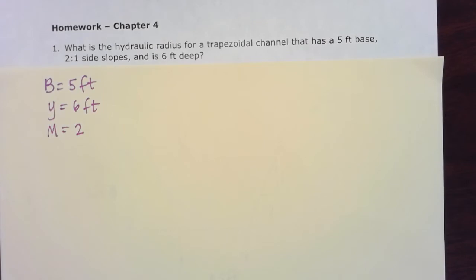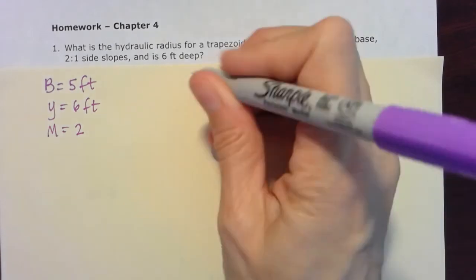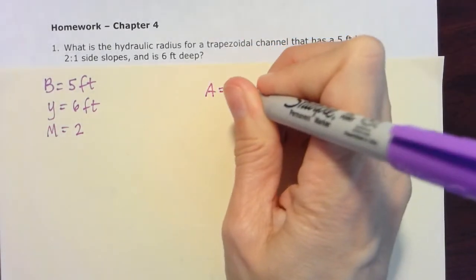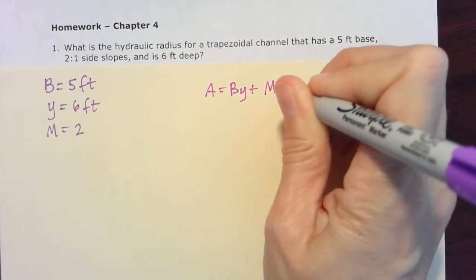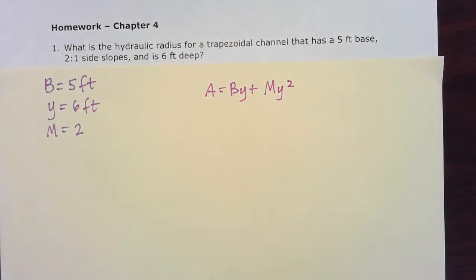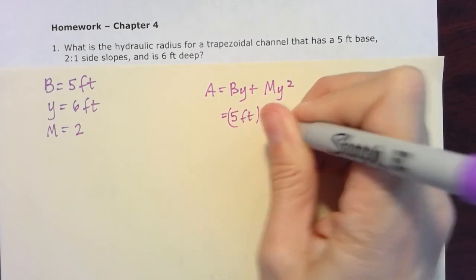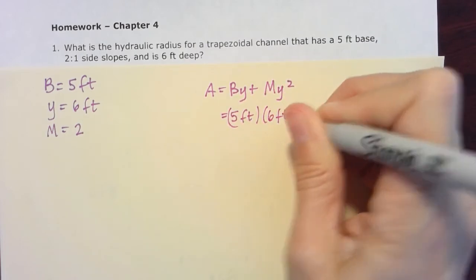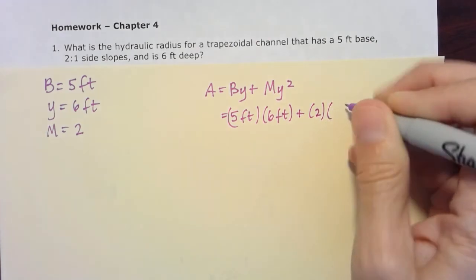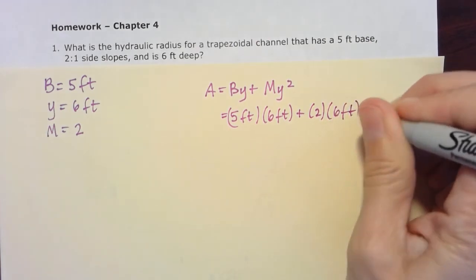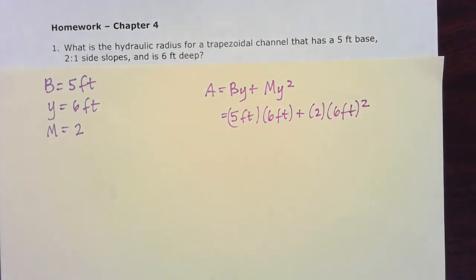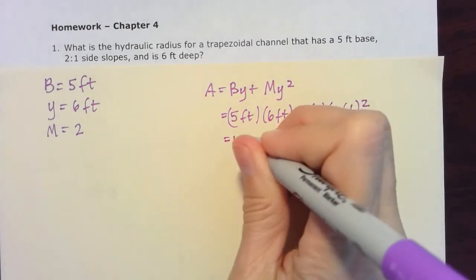The first thing I'm gonna do is solve for that area. The area is gonna be BY plus MY squared. So my B here is five feet, my Y is six feet, my M is two, and then again my Y is six feet and I'm gonna square that. So that's gonna get me a total area of 102 square feet.